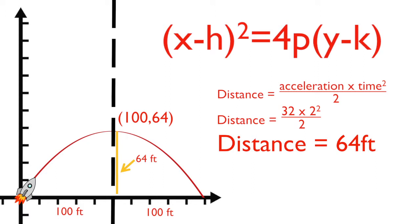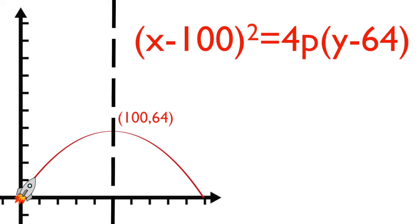With that piece of information, we now know the vertex of our parabola, which gives us the equation x minus 100 squared equals 4p y minus 64. To solve for p, we'll plug in a point on the parabola to create an equation with a single variable.